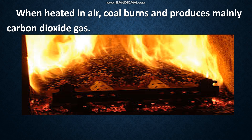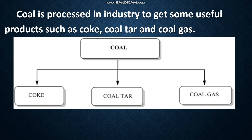When heated in air, coal burns and produces mainly carbon dioxide. Coal is processed in industry to get some useful products such as coke, coal tar, and coal gas. So we get three products from coal: coke, coal tar, and coal gas. Now we are going to learn about these in detail.